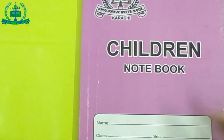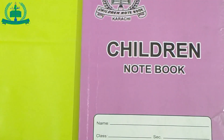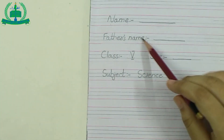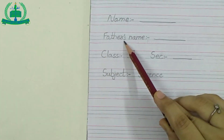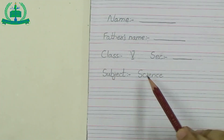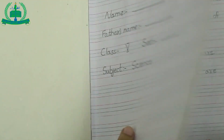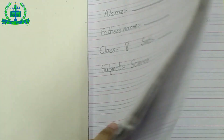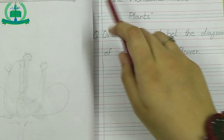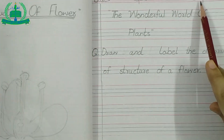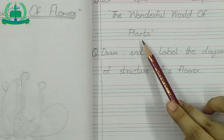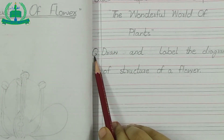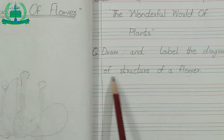Close your book. Now let me explain your home assignment. Open your science copy. You have one science copy and one interleaved science copy. Please cover your copy with a plastic sheet. Then fill in the first page with your name, father's name, class, section, and subject name. Then open a new page, mention the date, topic name, chapter number one: The Wonderful World of Plants. Draw a margin line and write the question: Draw and label the diagram of the structure of a flower.